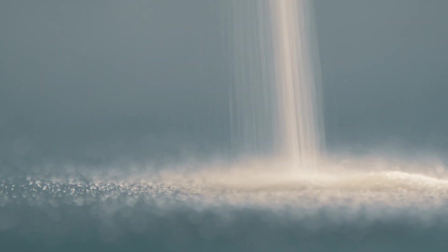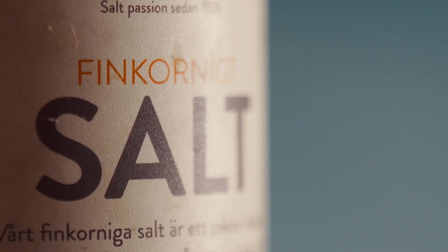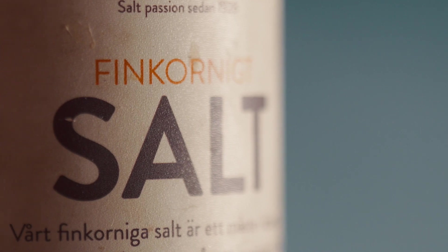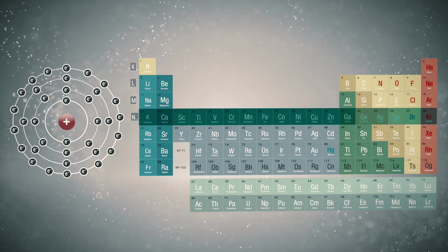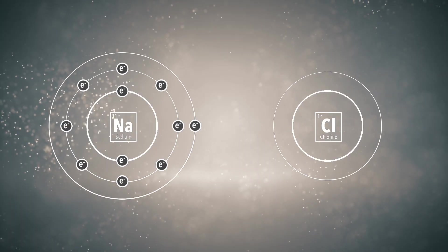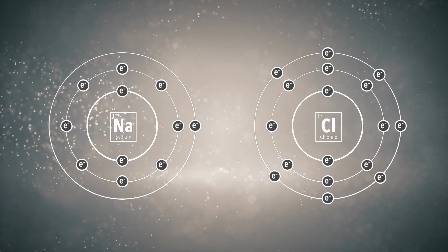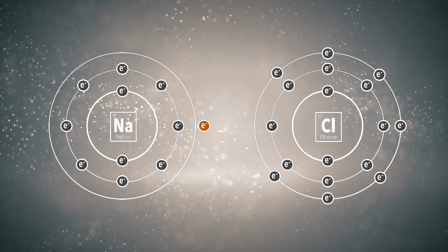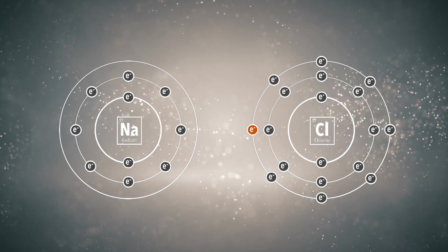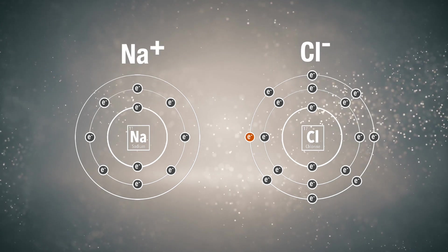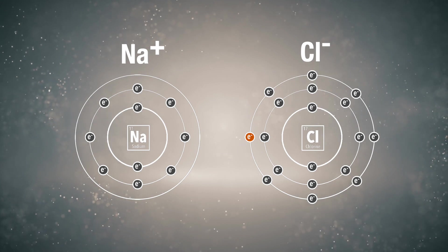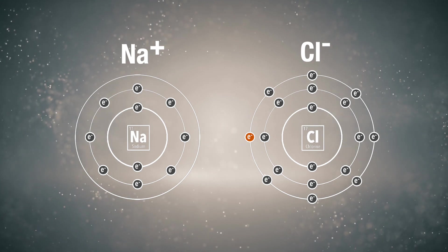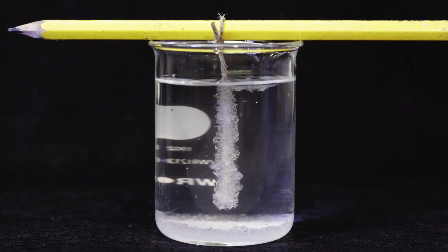First, ionic bonds. One example of a substance held together by ionic bonds is regular table salt. In general, elements prefer to have filled electron shells. To achieve this, elements can either give off or receive electrons from other elements. The result is that the atom becomes either positively or negatively charged. These so-called ions can then bind to other ions of opposite charge.